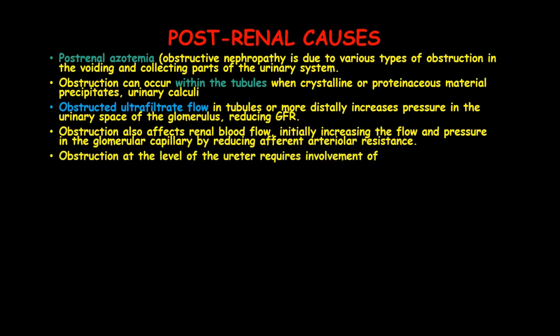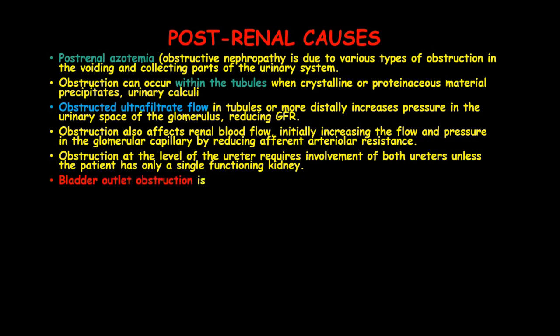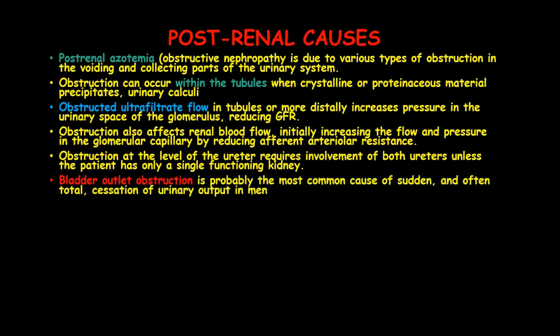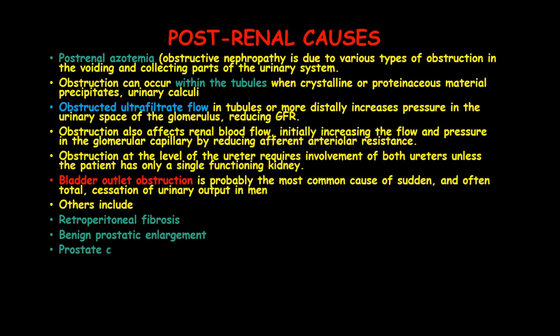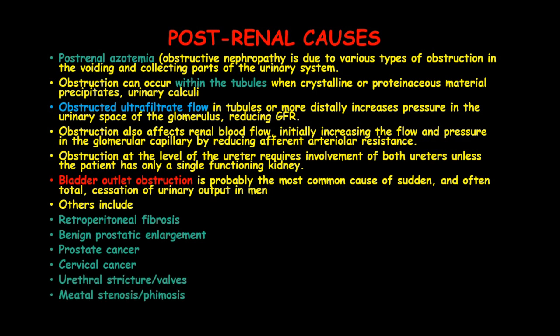Obstruction also affects renal blood flow, initially increasing flow and pressure of the glomerular capillary by reducing afferent arterial resistance. Obstruction at the level of the ureter requires involvement of both ureters unless the patient has only one functioning kidney. Bladder outlet obstruction is probably the most common cause of sudden and often total cessation of urinary output in men. Other causes include retroperitoneal fibrosis, benign prostate enlargement, prostate cancer, cervical cancer, urethral strictures and valves, and meatal stenosis.